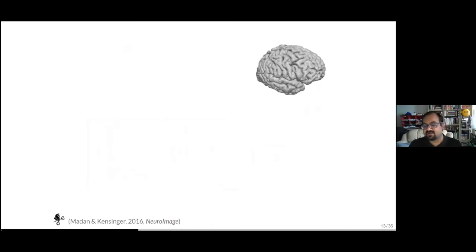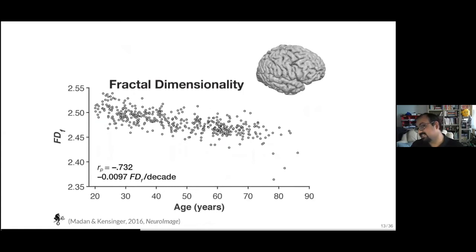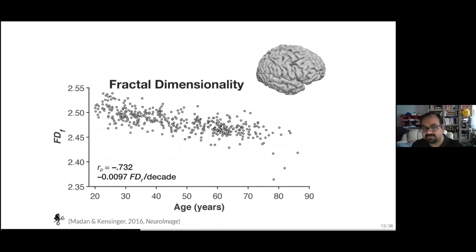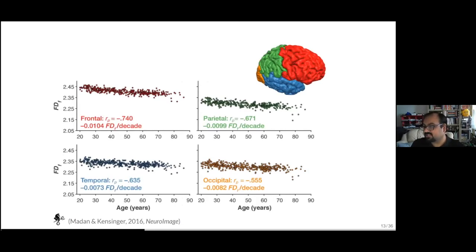Using fractal dimensionality across the unparcellated cortical ribbon for a full sample, it trends downward with a stronger effect than either thickness or gyrification. Importantly, fractal dimensionality is correlated with both thickness and gyrification: if you do a partial correlation of cortical thickness on age controlling for fractal dimensionality, those effects disappear — but the reverse is not true. Fractal dimensionality has additional variability beyond what's accounted for by conventional measures. Looking across lobes, those correlations are stronger than anything we had with thickness or gyrification.